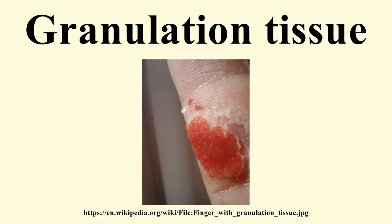It is necessary for a network of blood vessels to be established as soon as possible to provide the growing tissue with nutrients, to take away cellular wastes, and transport new leukocytes to the area. Fibroblasts, the main cells that deposit granulation tissue, depend on oxygen to proliferate and lay down the new extracellular matrix. In vascularization, also called angiogenesis, endothelial cells quickly grow into the tissue from older, intact blood vessels. These branch out in a systematic way, forming anastomosis with other vessels.